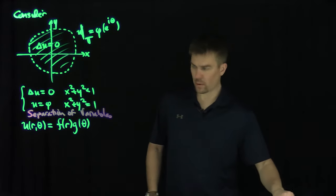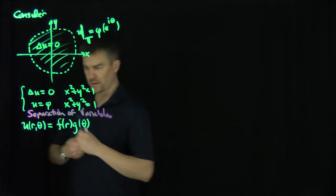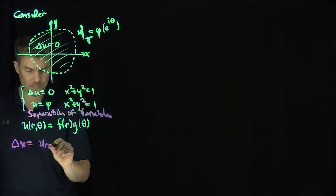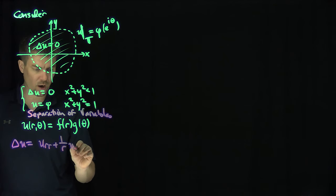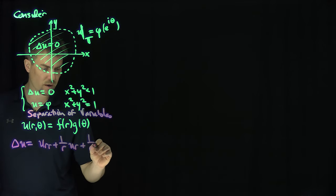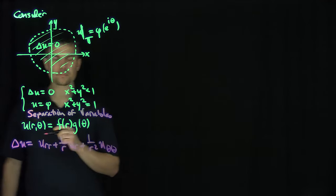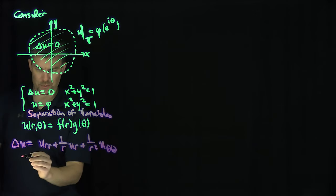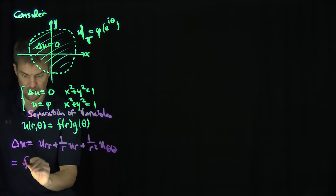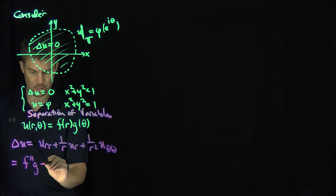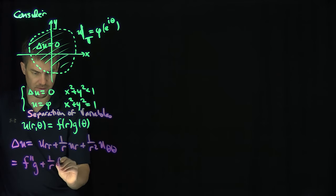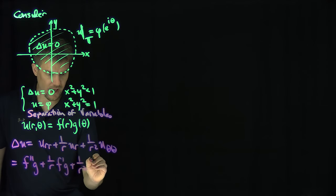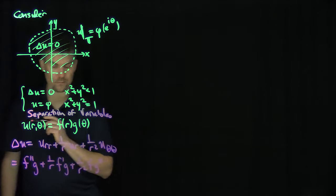What is the Laplacian in polar coordinates? The Laplacian of u in polar coordinates is u_rr + (1/r) u_r + (1/r²) u_θθ. Plugging in our separated form, this becomes f''g + (1/r) f'g + (1/r²) f g''.